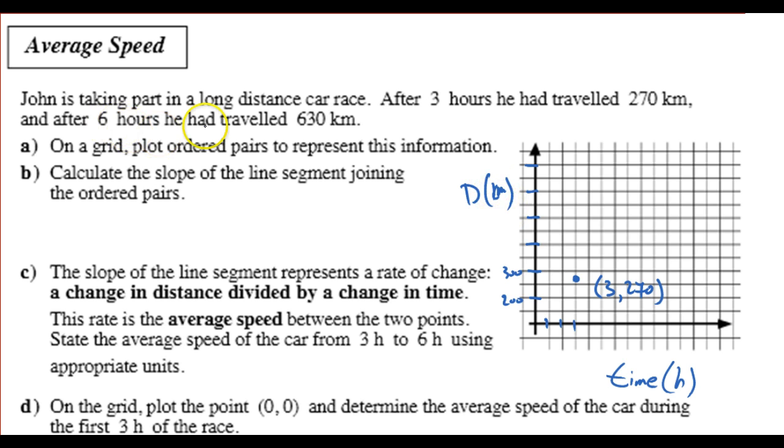The second point is, 6 hours, he travels 630 kilometers. So, 4, 5, 6, 630, right about, again, this doesn't have to be perfect. There we are, right about there, I believe. 6, 630, more or less. So, if I connect these, there we go. So, it looks like some time went on and he didn't really go anywhere. I wonder what happened there. 6 hours and 630 kilometers.